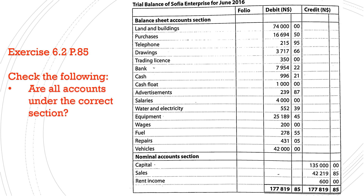Are all the accounts under the correct section? The balance sheet account section had the following: Land and buildings — correct, it's an asset. Purchases and telephone are expenses. Drawings — correct. Trading license is an expense. Bank, cash, and petty cash are all current assets.